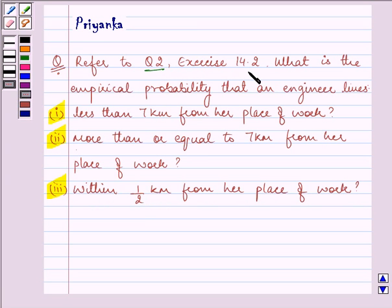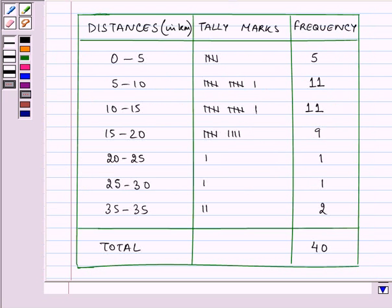First of all we need to refer to question 2 of exercise 14.2 and the answer was this. With the help of this frequency and the total, we need to find out the probability.